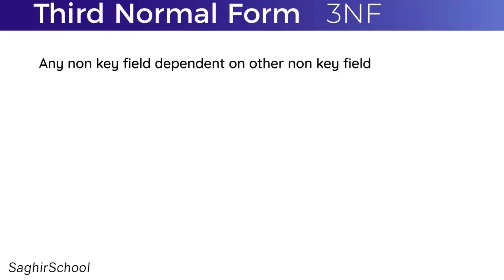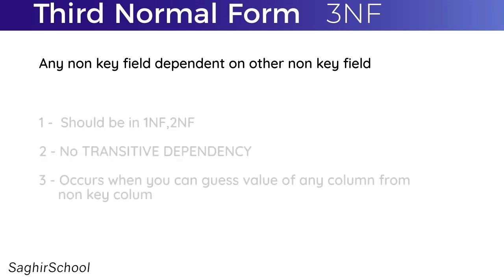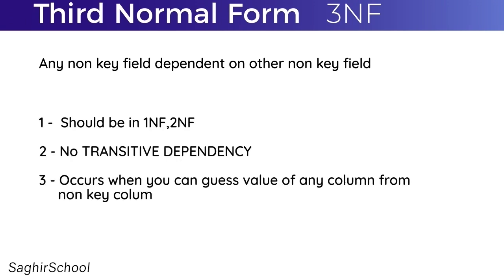For a table to be in Third Normal Form, it must already be in First Normal Form and Second Normal Form. Third Normal Form should not have any transitive dependency.